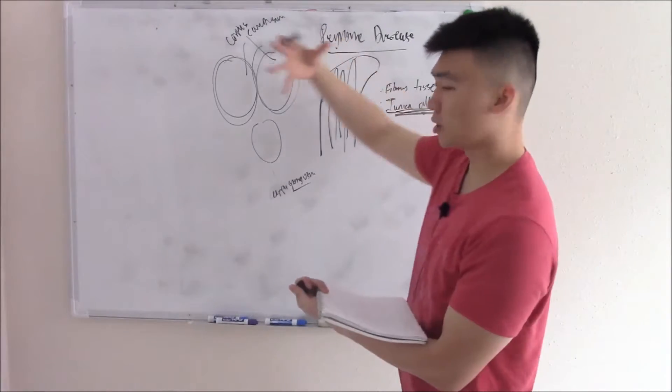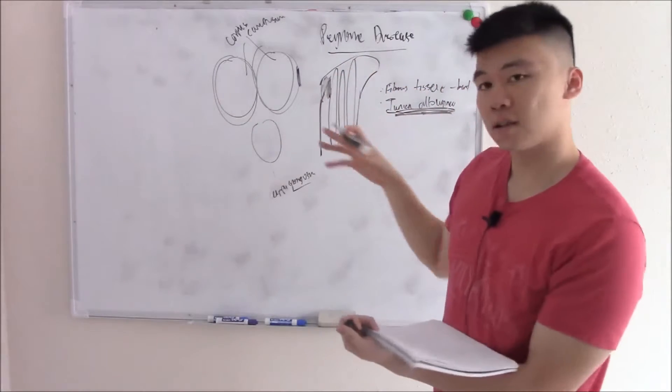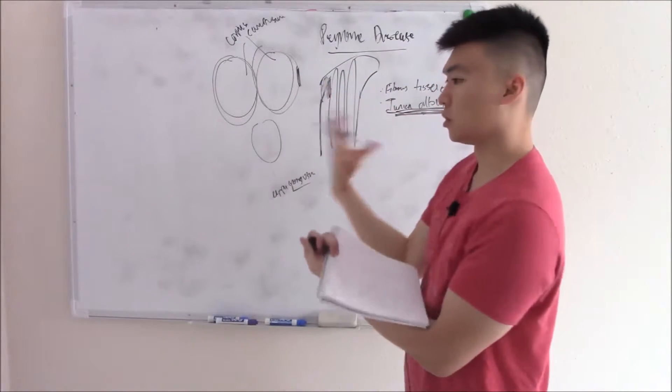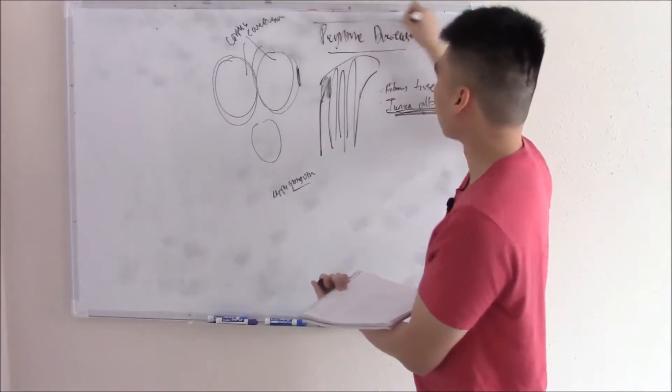The corpus cavernosum is covered by the sheath called your tunica albuginea. If you have trauma to your penis for whatever reason, you can develop scar tissue, and that can contract on your corpus cavernosum, contract on your penis and cause it to bend. That's what we call Peyronie disease.